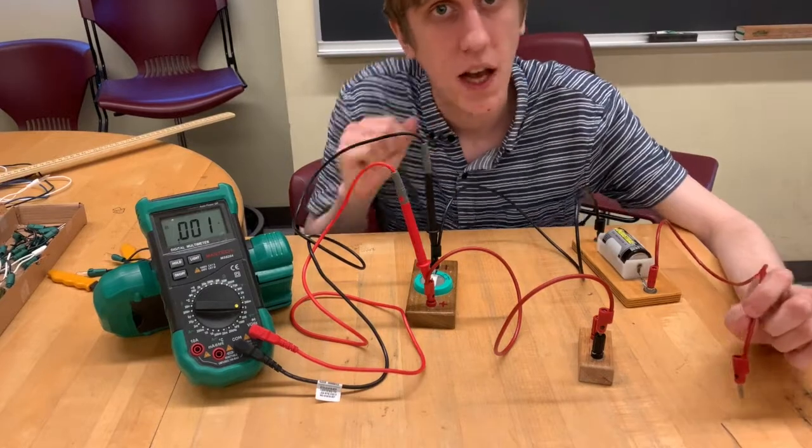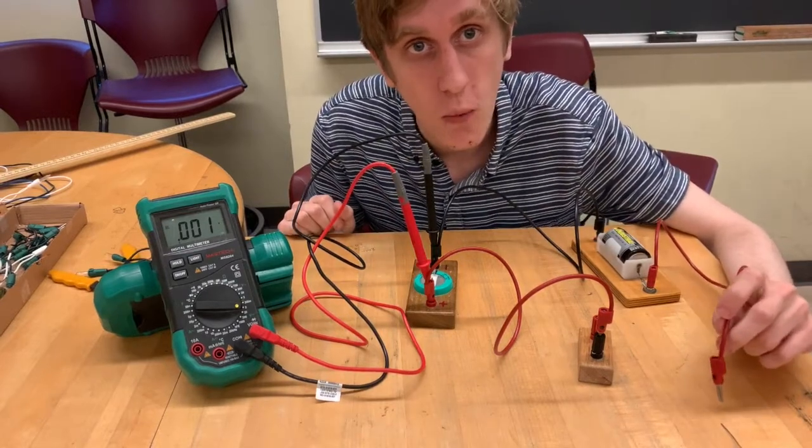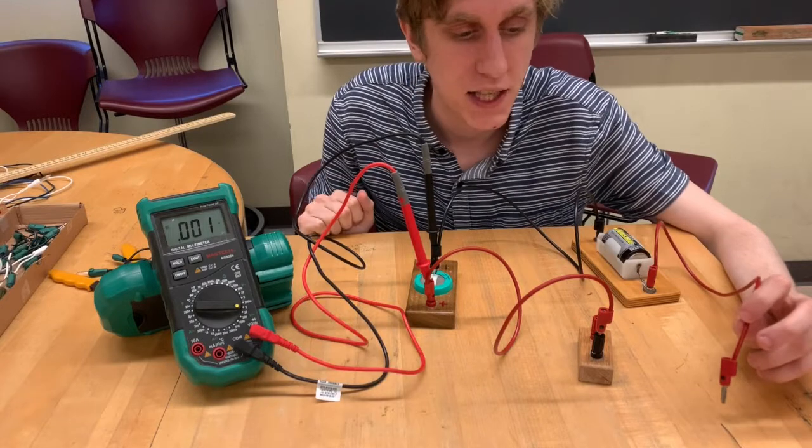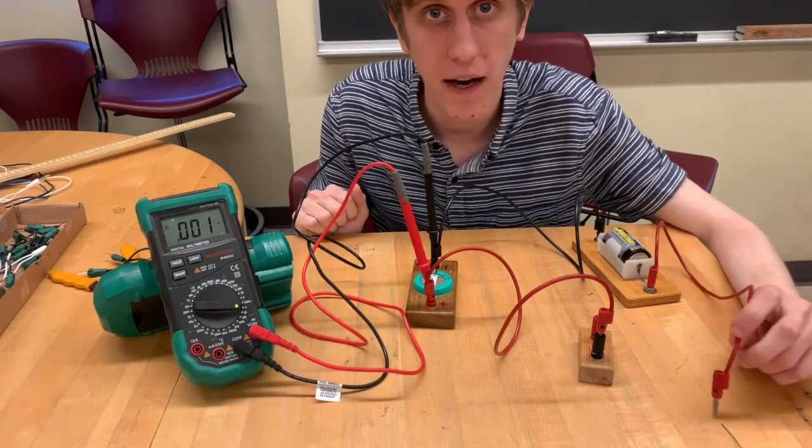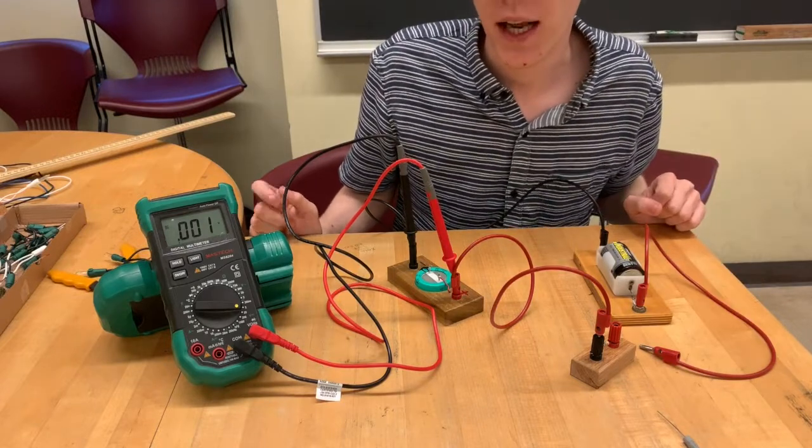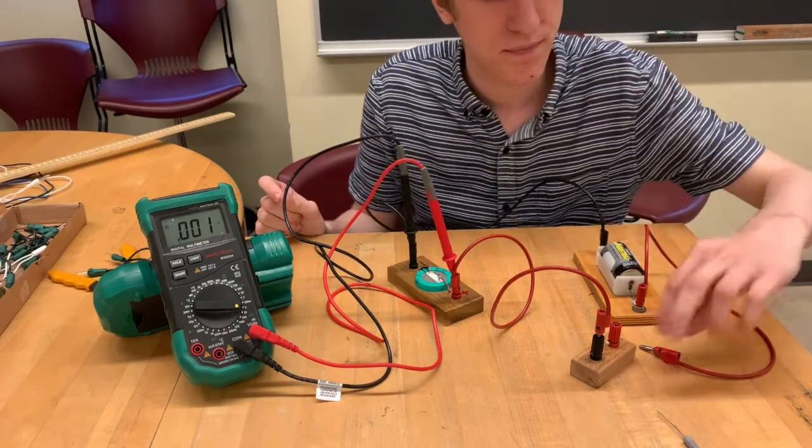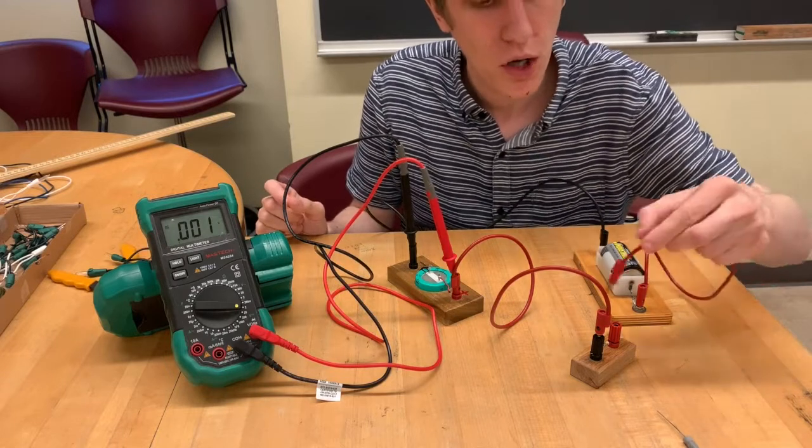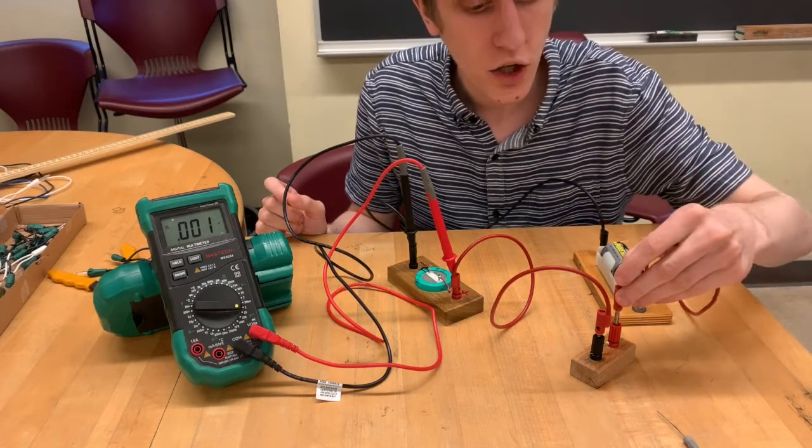The resistance of this resistor is 10 ohms, and the capacitance of this capacitor is 1 farad. Alright, I'm going to connect this wire to the resistor to complete the circuit. Be ready to take your data points. Ready, set, go.